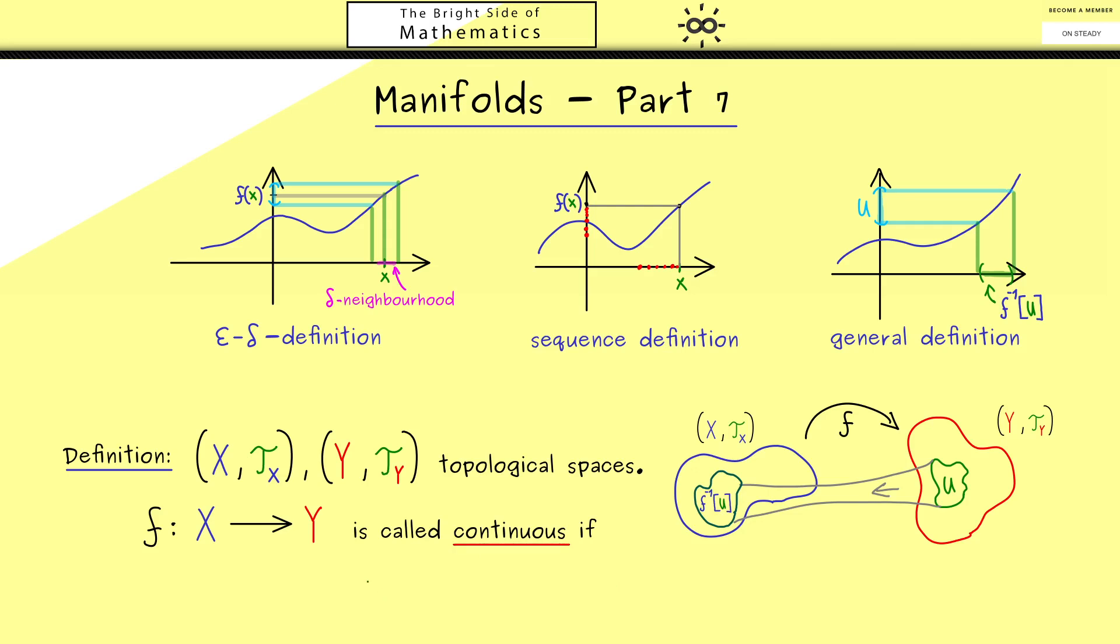So formally we would write for all U in the topology Ty, we get that the pre-image f^(-1)(U) is in Tx. So I think this is very easy to remember. Continuous means pre-images of open sets are always open sets.